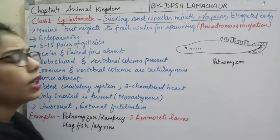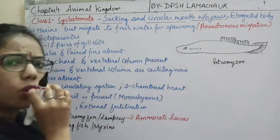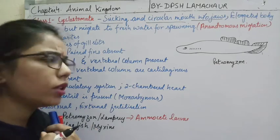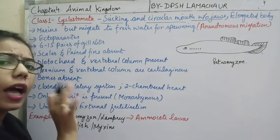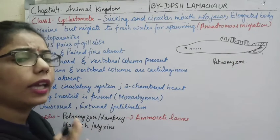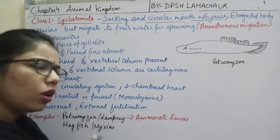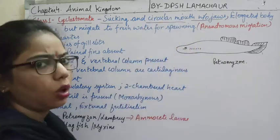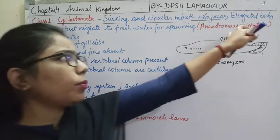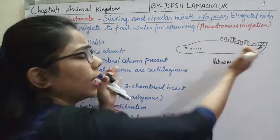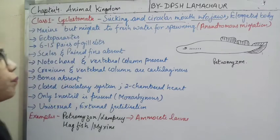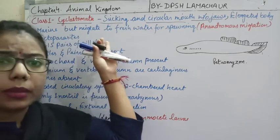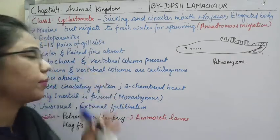I have drawn a picture of Petromyzon — you can see there are no jaws, unlike our mouth which has upper and lower jaws. These are lower animals with a circular mouth without jaws. Another important point is their elongated body. One by one we will discuss the characteristics of animals under Cyclostomata.